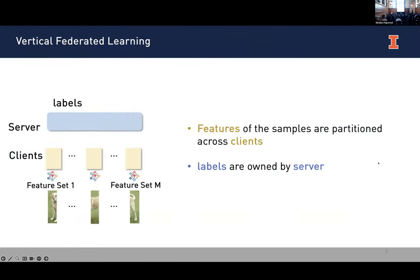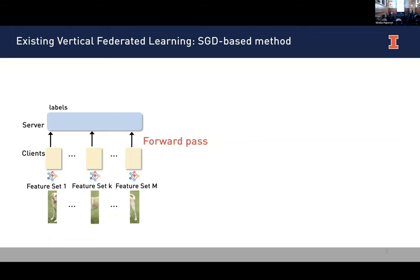In federated learning, we are going to train a shared global model with distributed clients. The clients will keep their local data locally to protect privacy. In vertical federated learning, typically the features of the samples are partitioned across the clients, so they hold distributed features for the same set of samples, while the labels are owned by the server. To solve this vertical federated learning problem, people usually use the SGD-based method.